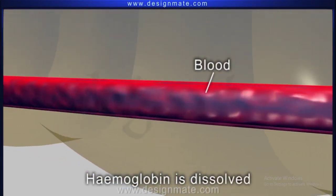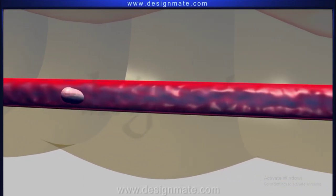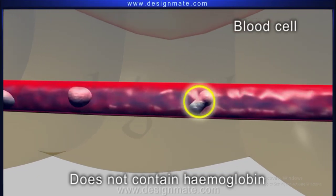Hemoglobin is dissolved in the blood plasma and gives red color to the blood. Blood cells do not contain hemoglobin.